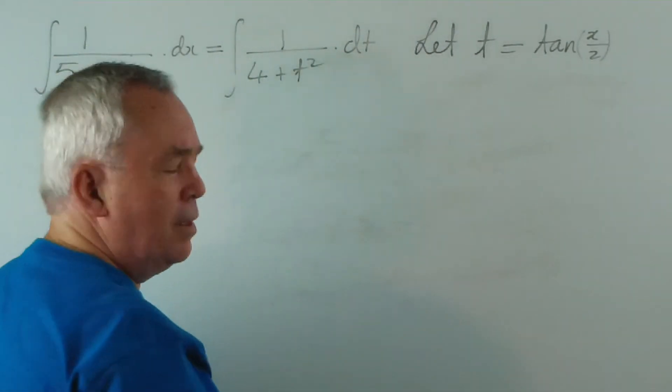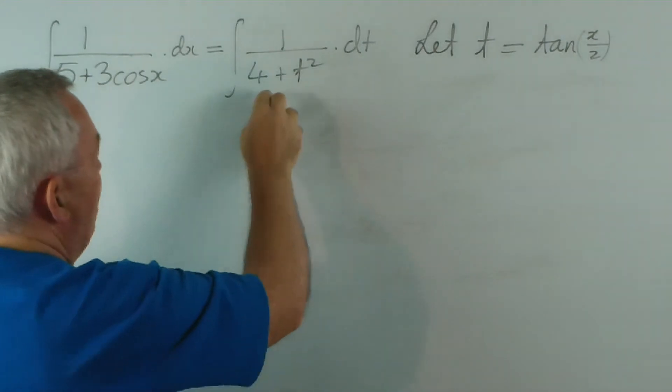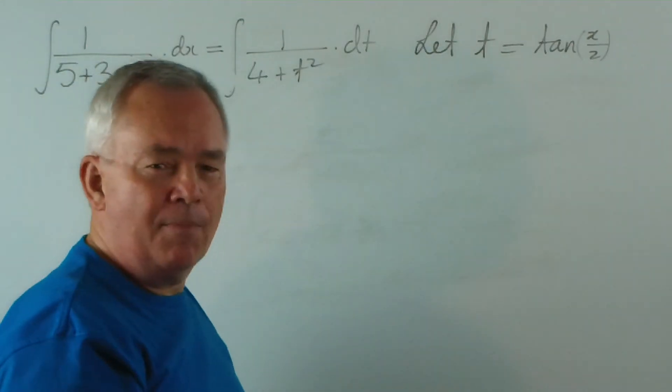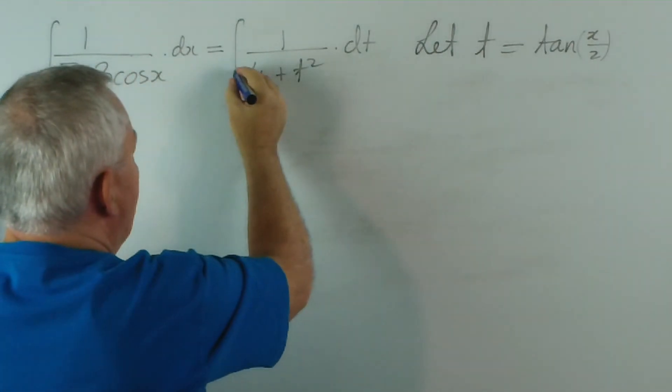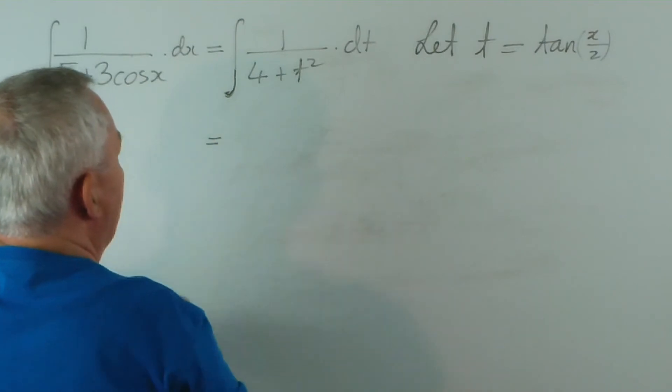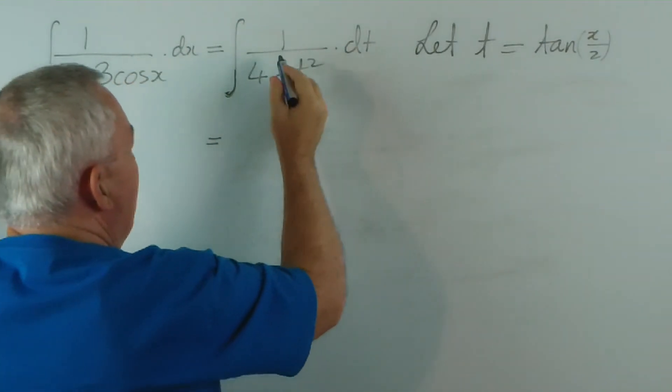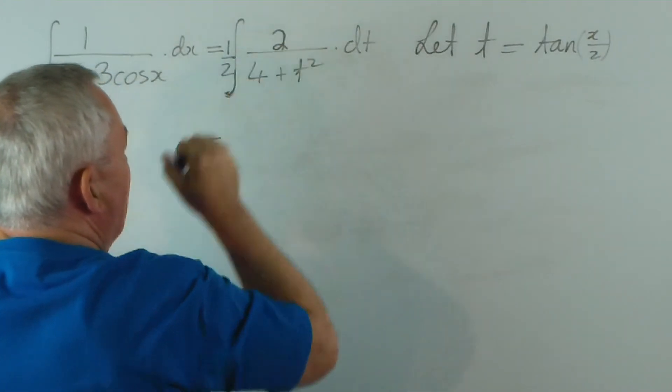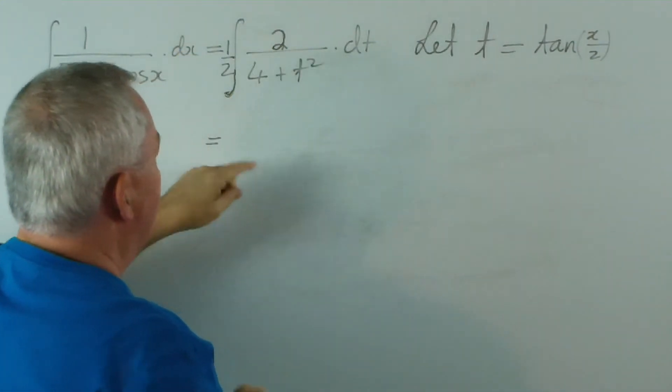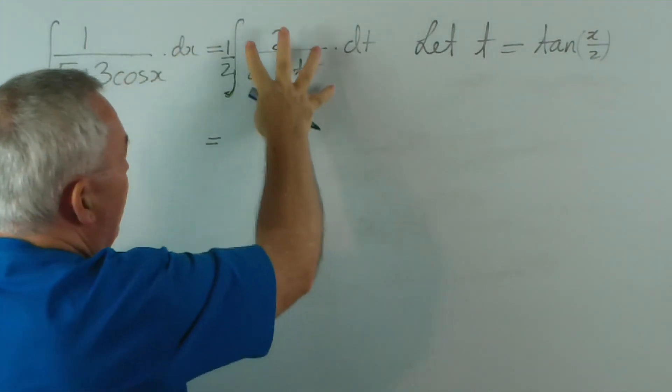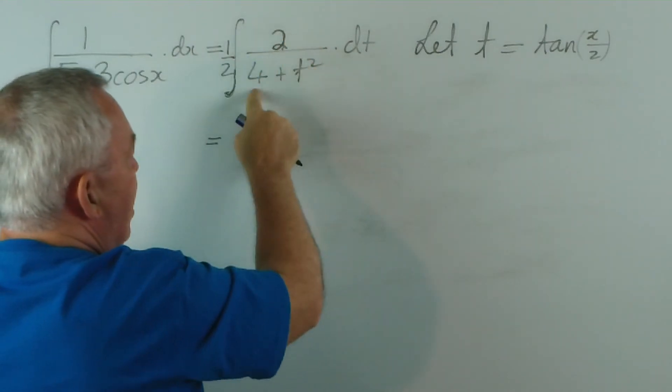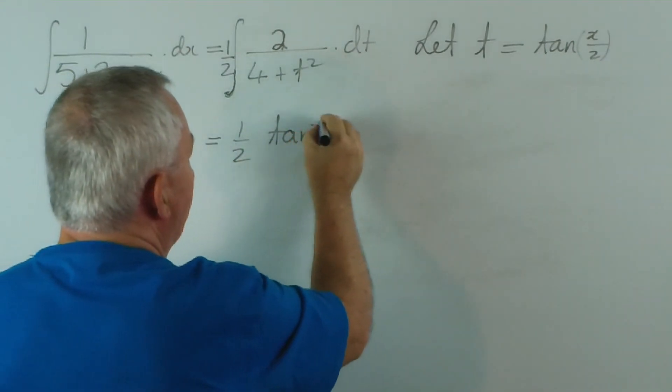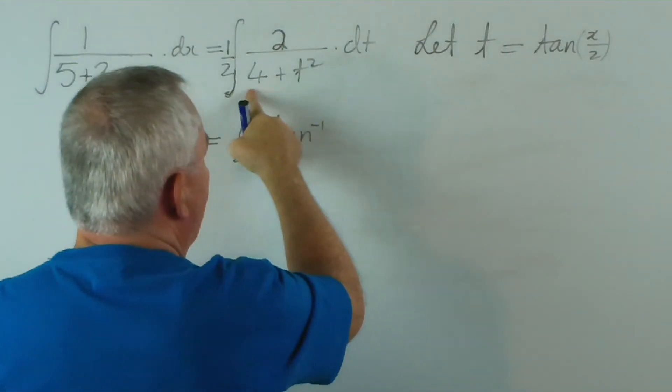This, I hope, you recognize as a fairly standard pattern. We'll talk about the numerator in a moment, but as a sum of squares, this usually is connected with a tangent function. The general pattern looks like this: I'm going to put a half out the front and multiply the numerator in here by 2. This is a standard pattern of a over (a squared + t squared), and this will give us the inverse tangent of t over 2.